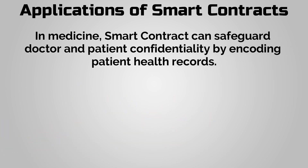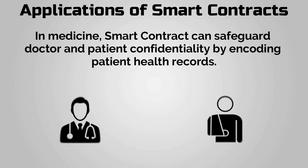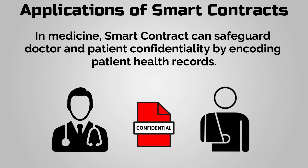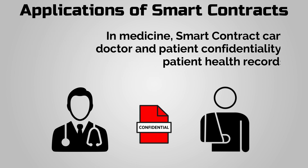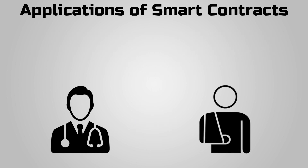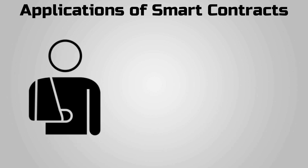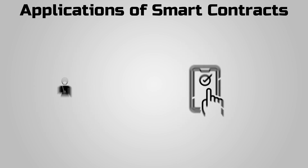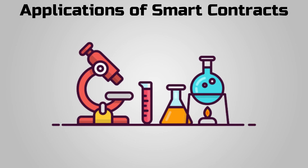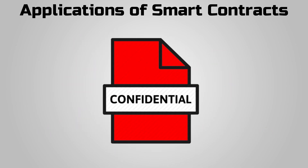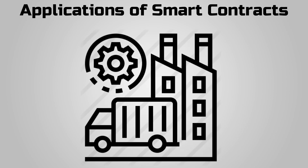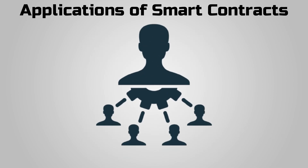In medicine, smart contracts can safeguard doctor-patient confidentiality by encoding patient health records and ensuring only verified people have access to them. Patients can book and pay for appointments and medications, and automatically send their receipts to insurance companies as proof of service. Scientists can carry out research confidentially, and monitoring bodies can manage supplies, supervise drugs, and ensure regulation compliance through their application.